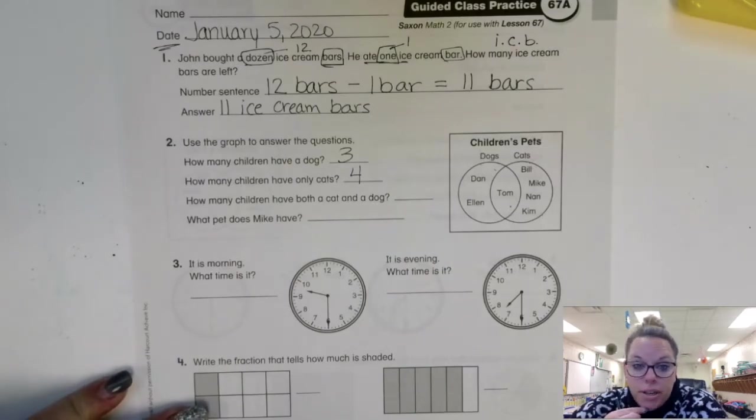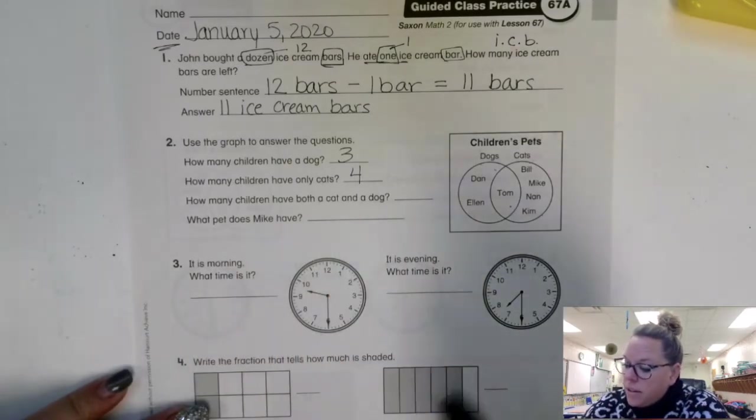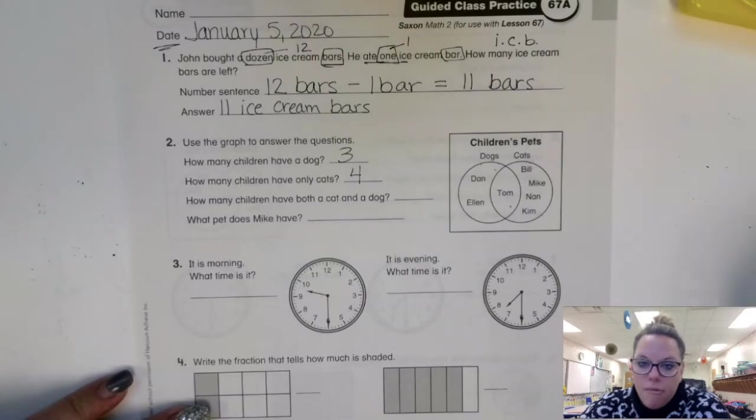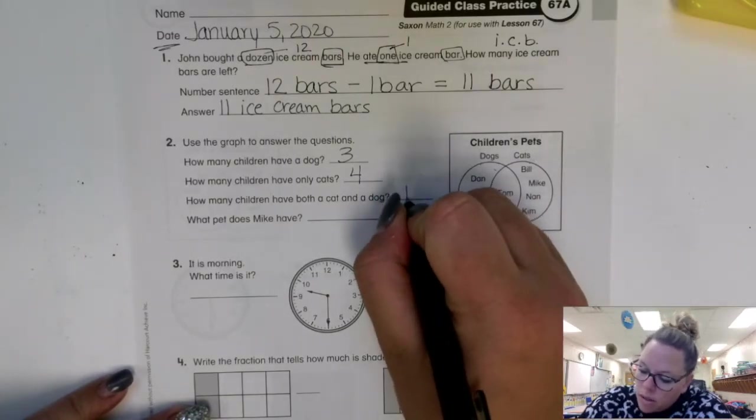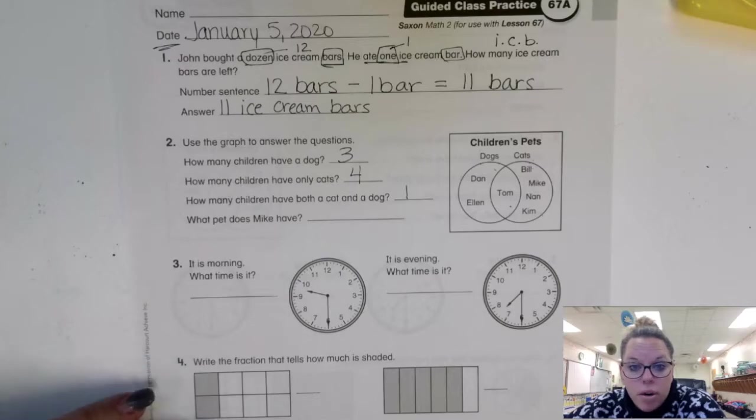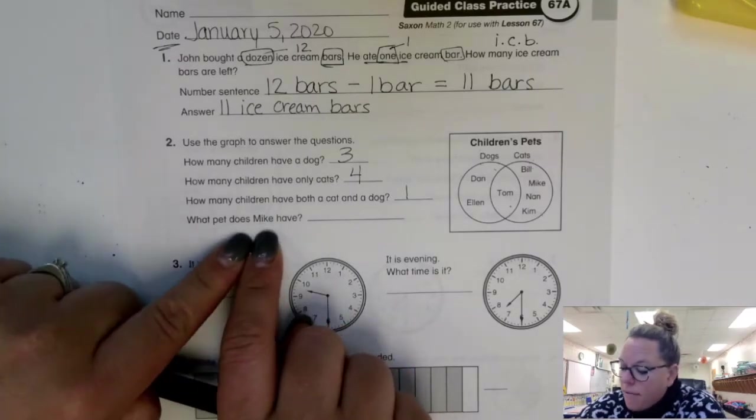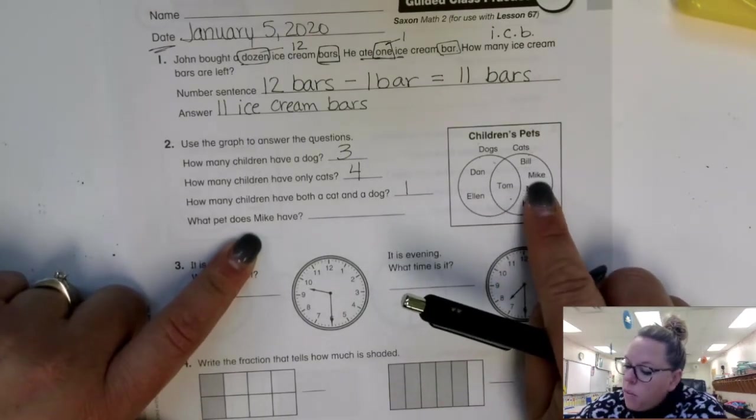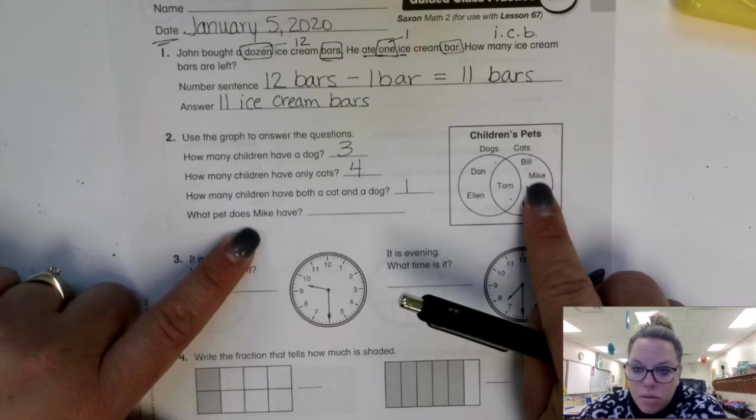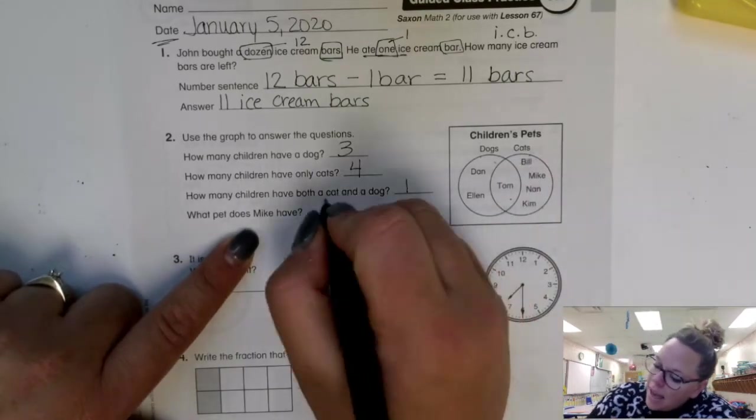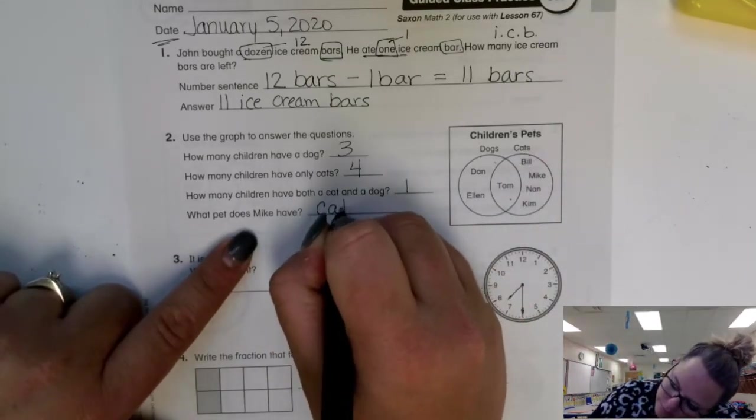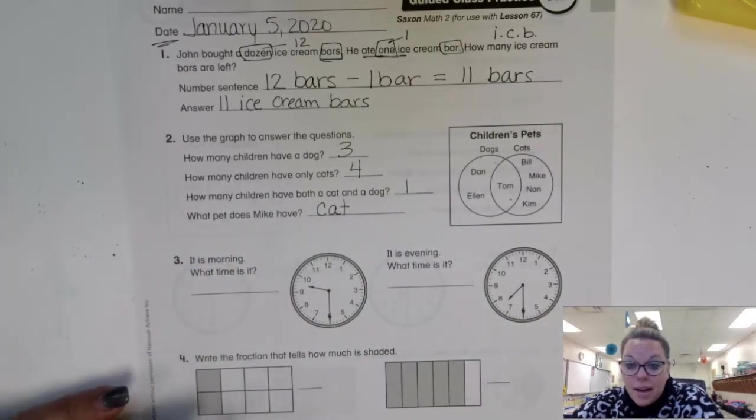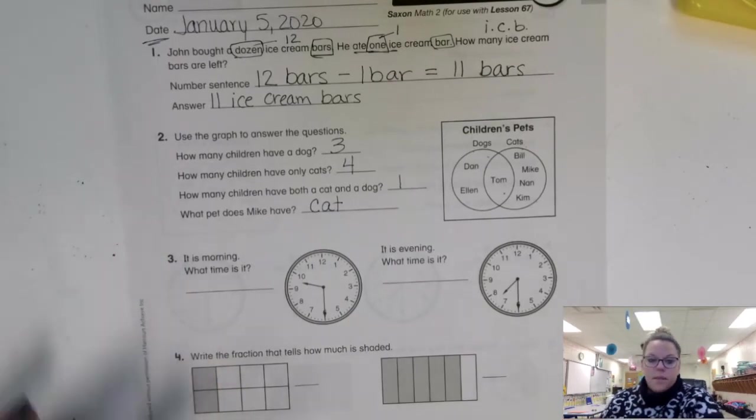How many children have both a cat and a dog? That's our middle. How many have both? Tom only, so that's just one. Now it wants to know what pet does Mike have? Here's Mike's name. I have to find Mike over here. Up here he is. What does Mike have at his house? He has a cat. So you're going to write cat on the line.